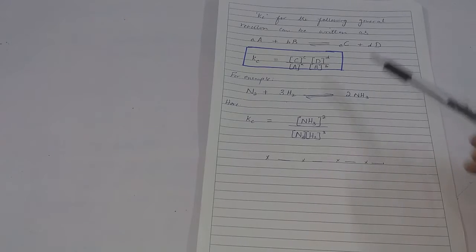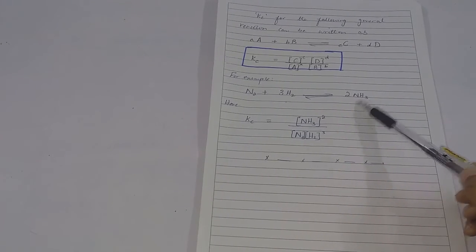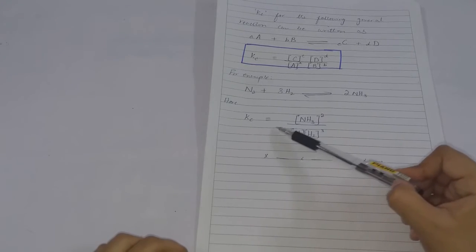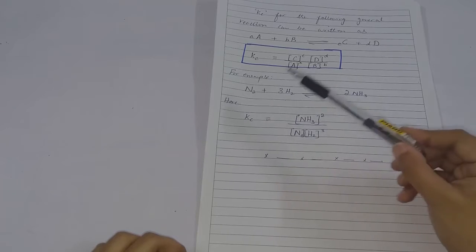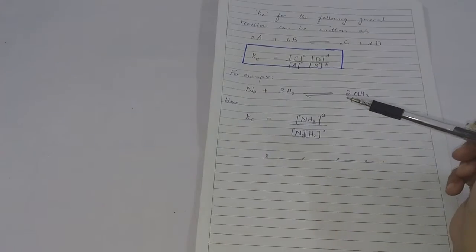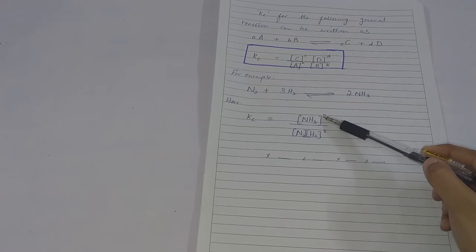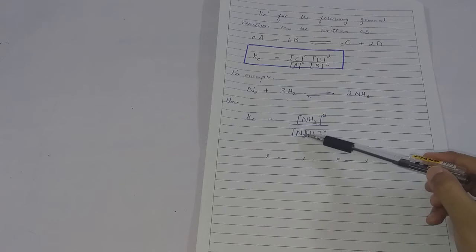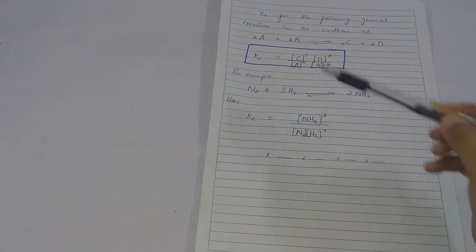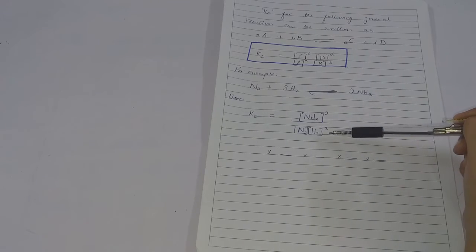For example, consider the reaction N₂ + H₂ ⇌ NH₃. We write KC = [NH₃]² / ([N₂] × [H₂]³). NH₃ has coefficient 2, so it is raised to the power 2. N₂ has no written coefficient so its power is 1, and H₂ has coefficient 3, so it is raised to the power 3. In this way, the equilibrium constant expression is written.